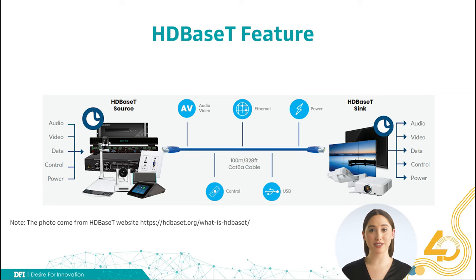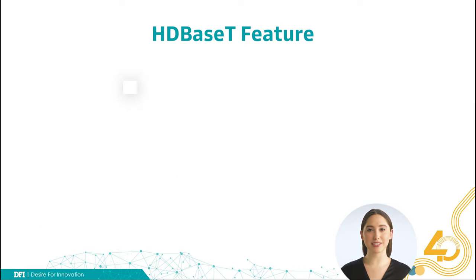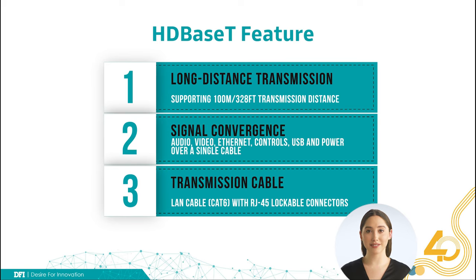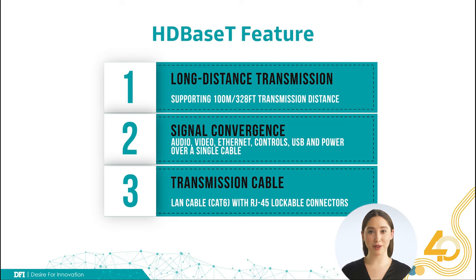There are three main features of HDBaseT: long-distance transmission supporting 100m/328ft transmission distance; signal convergence that includes audio, video, Ethernet, controls, USB, and power over a single cable; and the transmission cable is a LAN cable, CAT6, with RJ-45 lockable connectors.